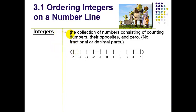An integer is the collection of numbers consisting of counting numbers, their opposites, and zero. I'm going to talk a little bit more about what opposites mean. There's going to be no fractional or decimal parts. Even though there are fractions and decimals all along this number line in between our whole numbers, we don't consider it to be an integer because an integer has to be a counting number.